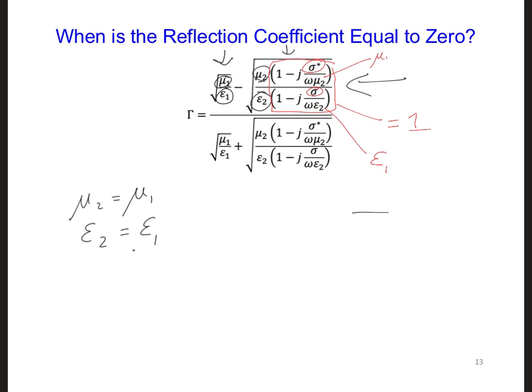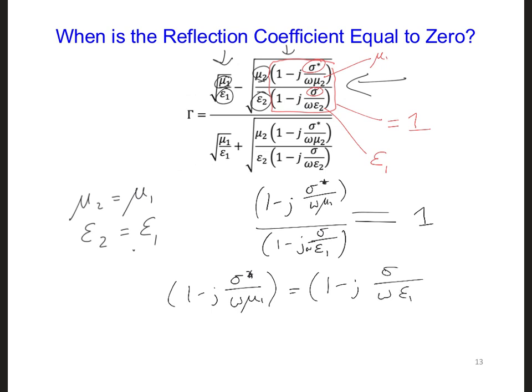So now let's see if we can simplify this expression to develop a more clear relationship between sigma and sigma star. We're starting off with 1 minus j sigma star over omega mu1, over 1 minus j sigma over omega epsilon1, and we want this equal to 1.